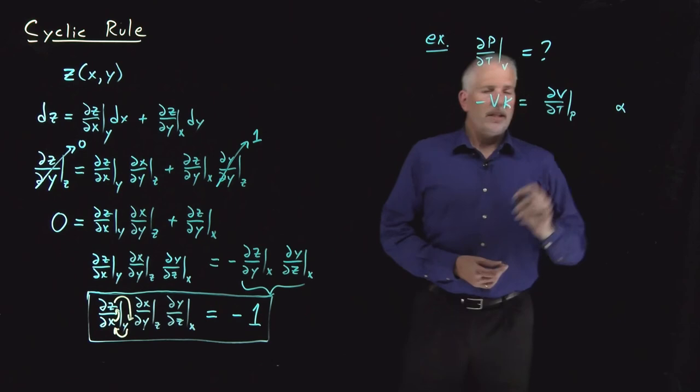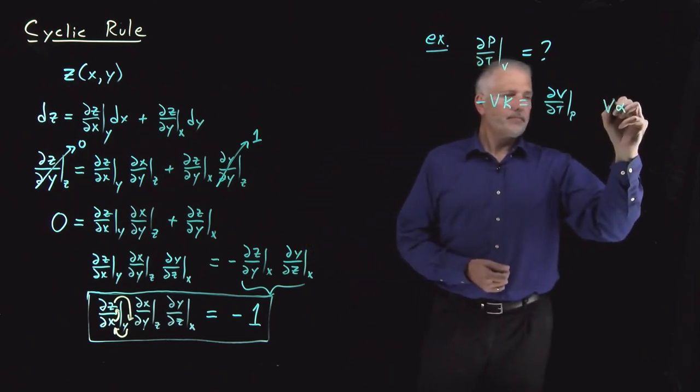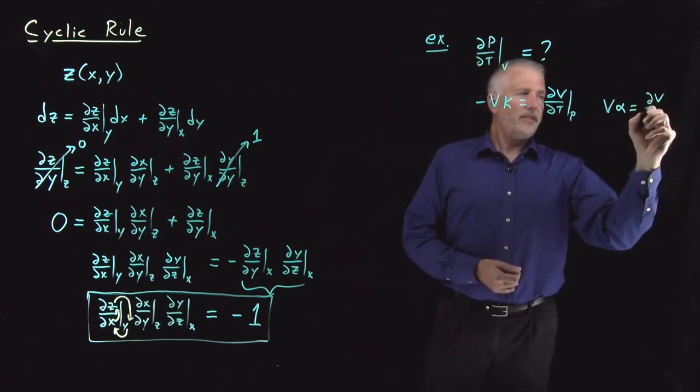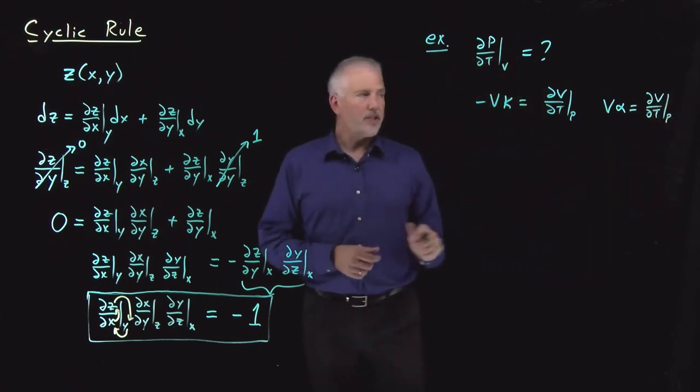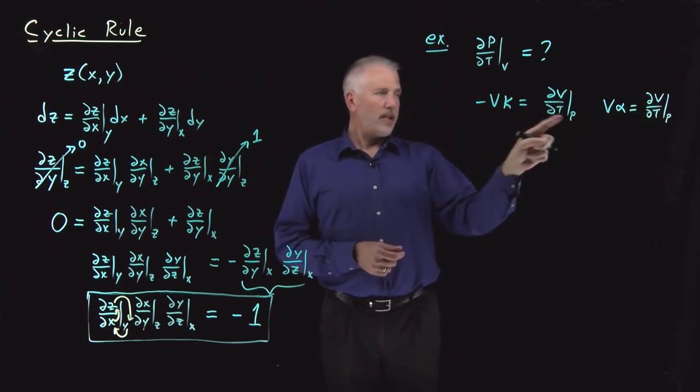Likewise, we know α, the thermal expansion coefficient. That's ∂V/∂T at constant p, a different combination of V's and T's and p's than either.